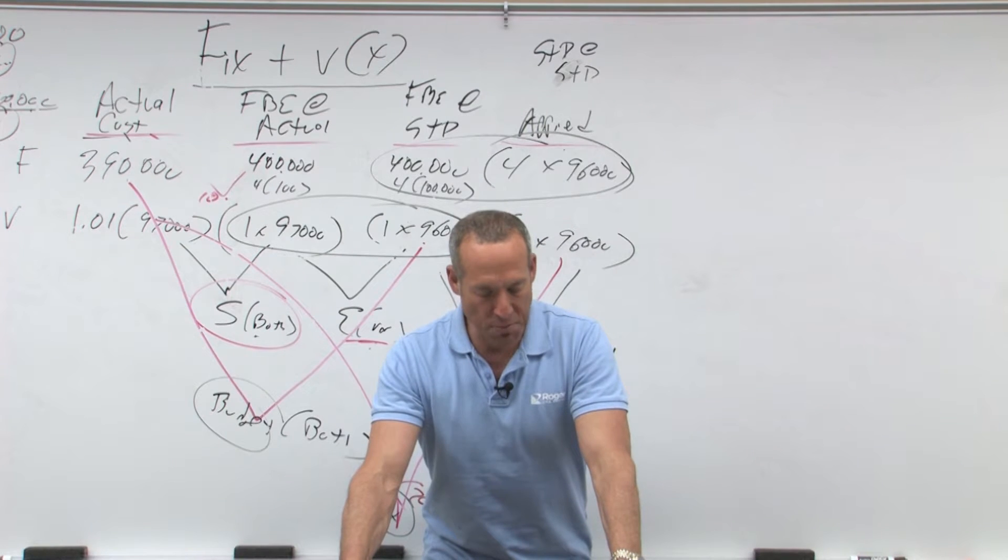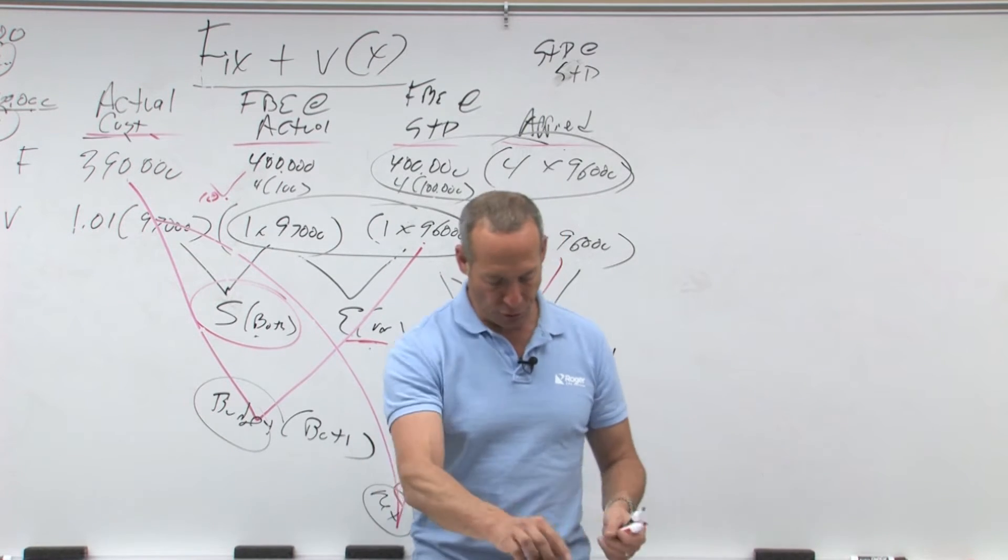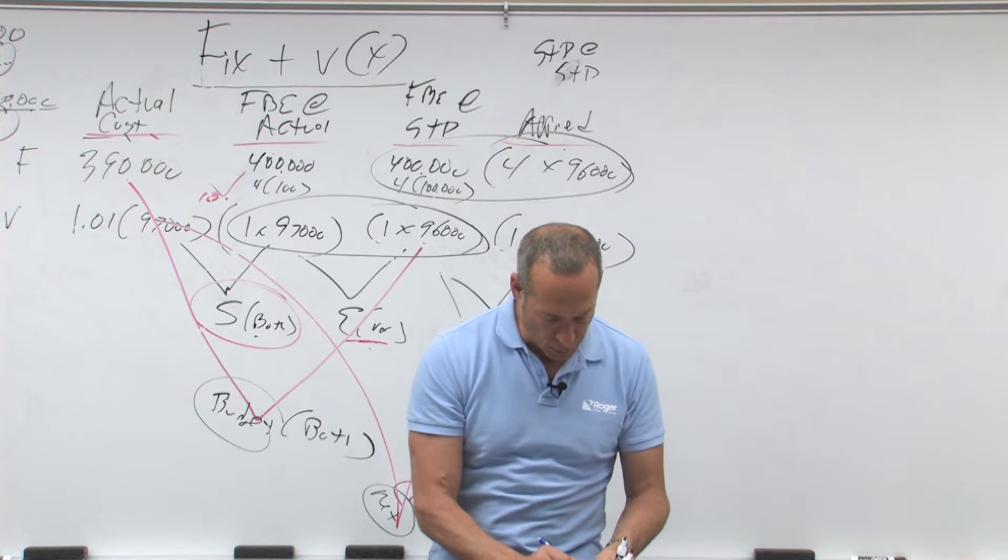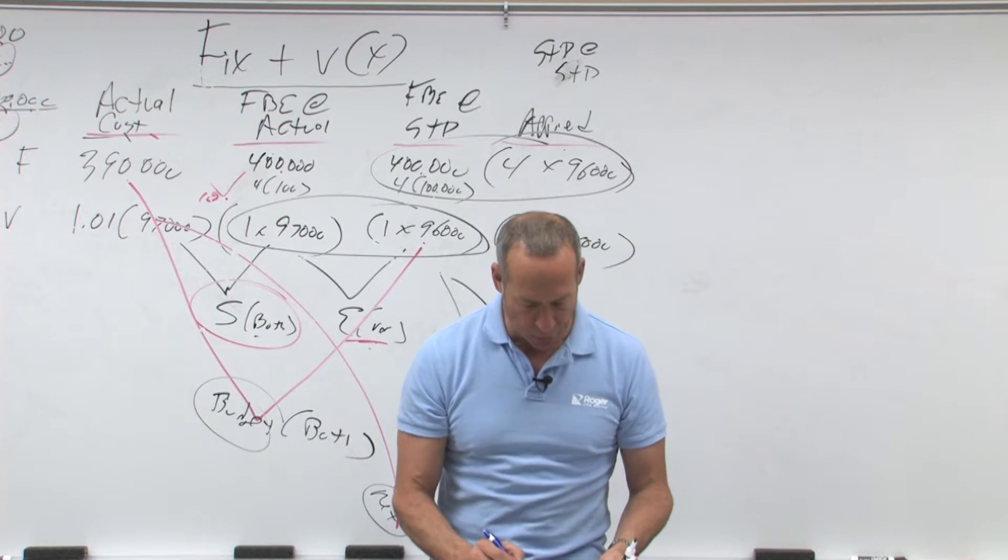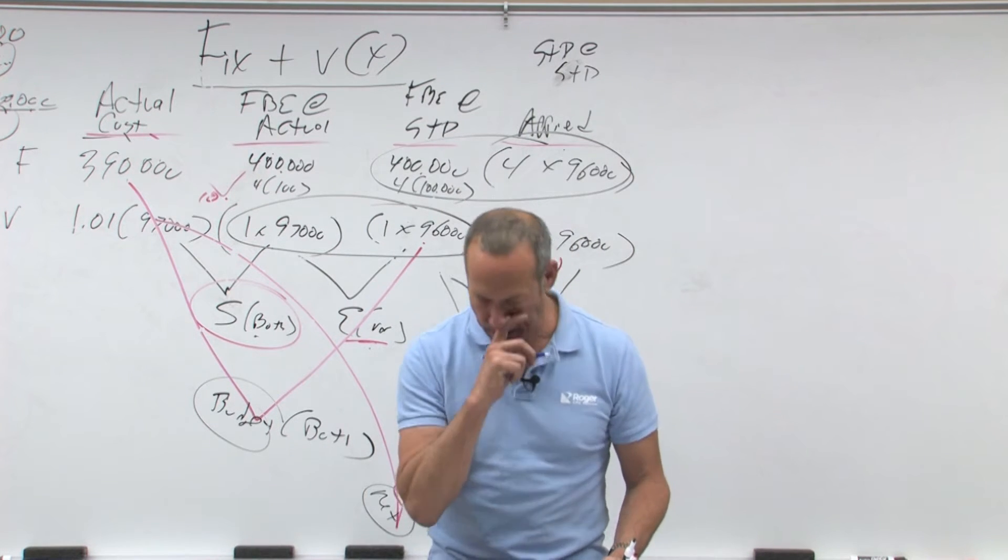Number five. Now we get to work with some numbers. Last sentence first. It says Rose X3 unfavorable variable overhead efficiency variance was.